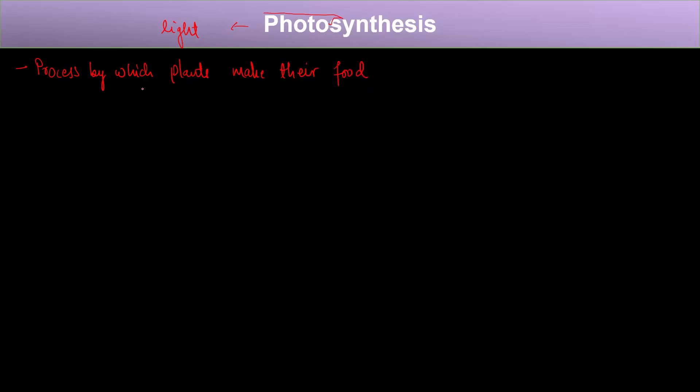The first topic is: what is photosynthesis? As the name suggests, it contains the term 'photo,' which means light. Photosynthesis is a process by which plants make their food in the presence of light. Because of this reason, it is called photosynthesis — that is, synthesis in the presence of light.